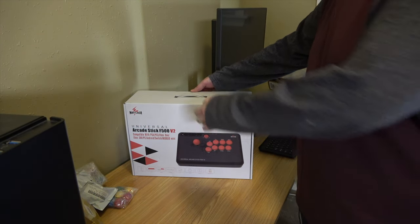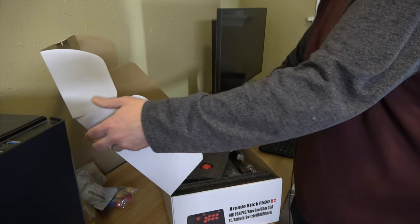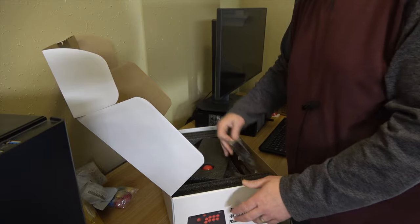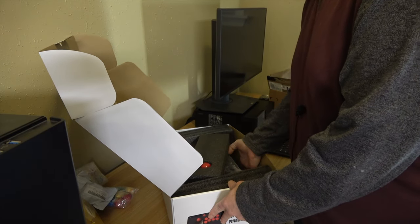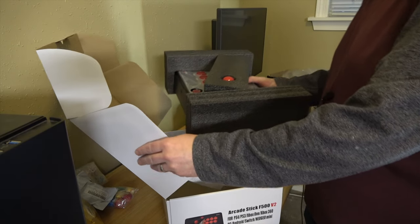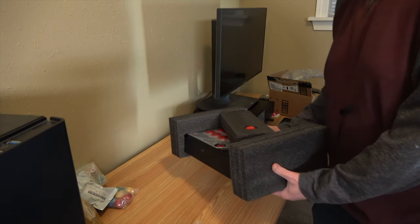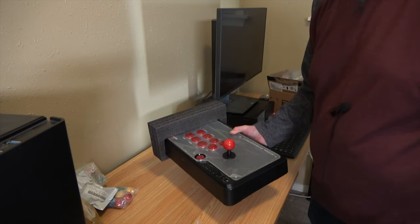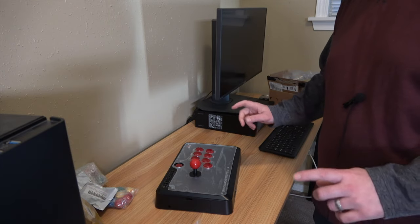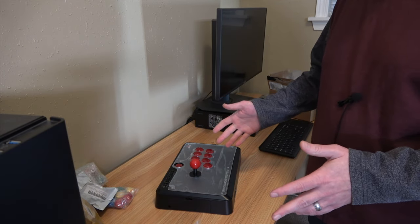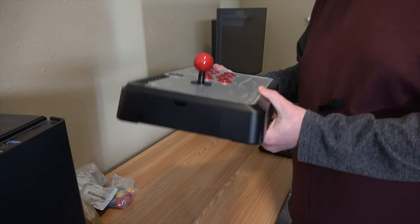Let's take one of these sticks out of the box and see what it looks like. It comes with an octagonal gate, but because I'm mostly doing just old-school emulation, I'm probably just going to leave the square gate on there. So here's what it looks like. It's pretty beefy. It feels substantial.